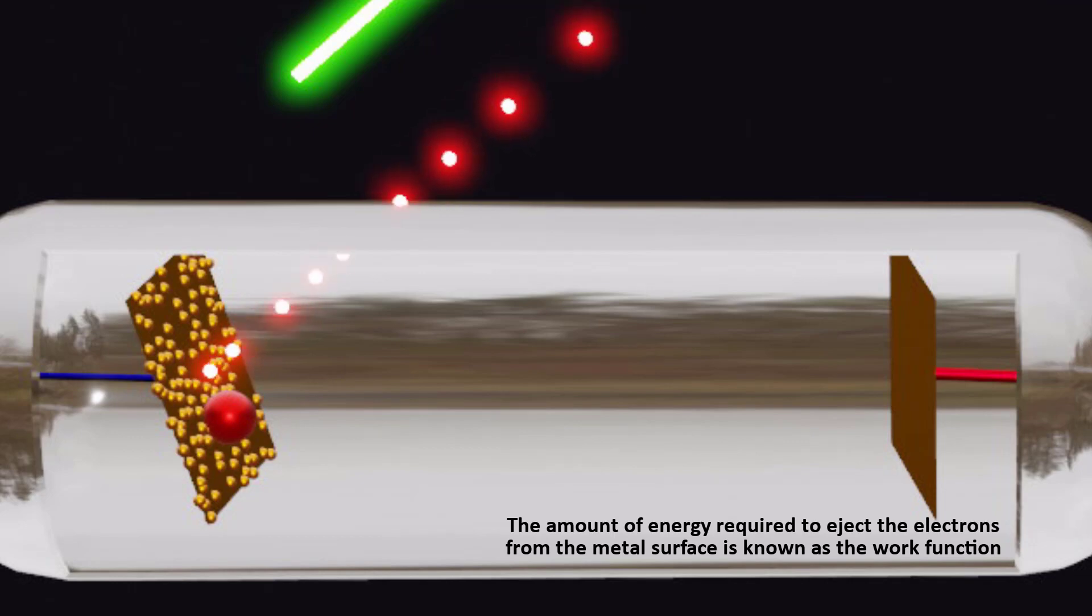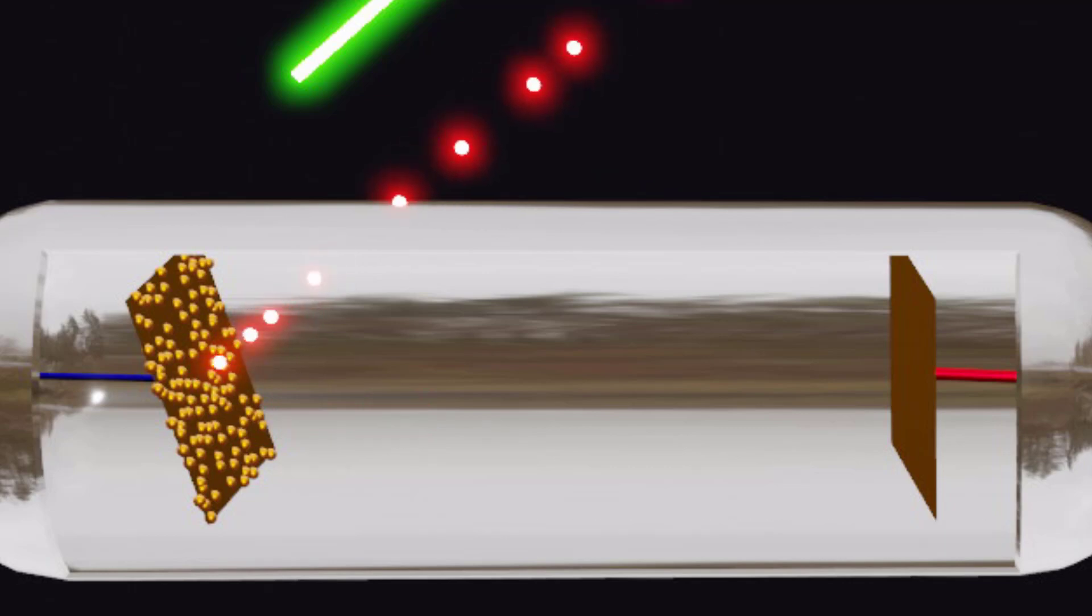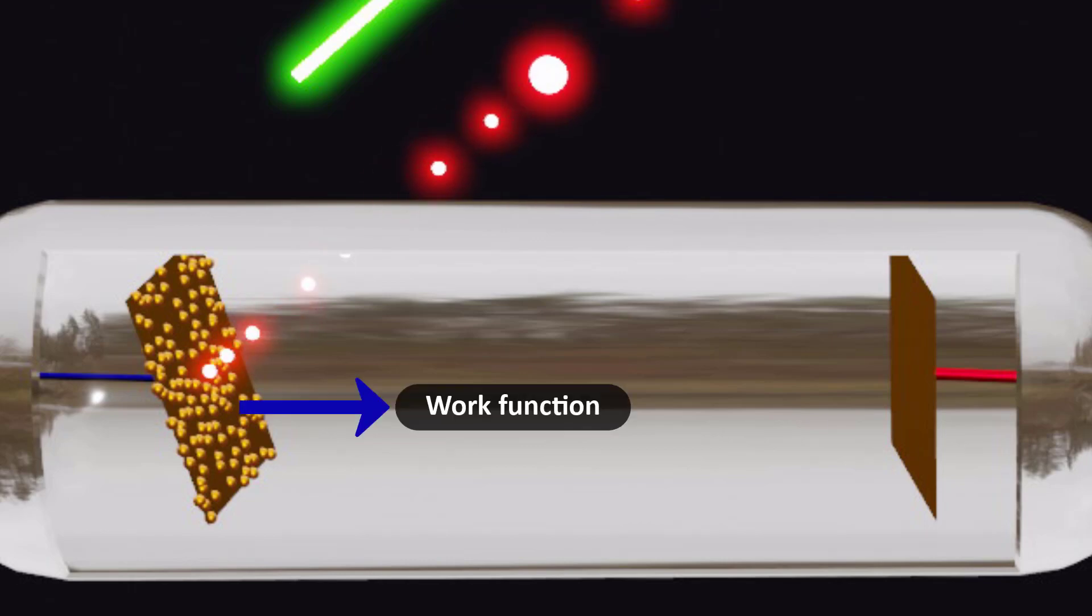The amount of energy required to eject the electrons from the metal surface is known as the work function. If the energy of the photons is sufficient to overcome the work function of the metal, electrons are ejected from the surface.